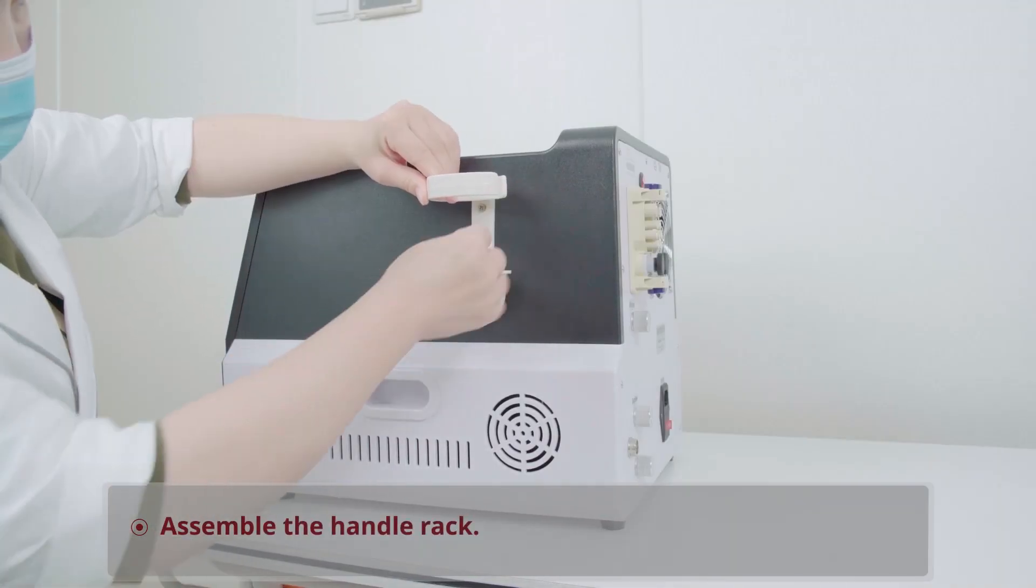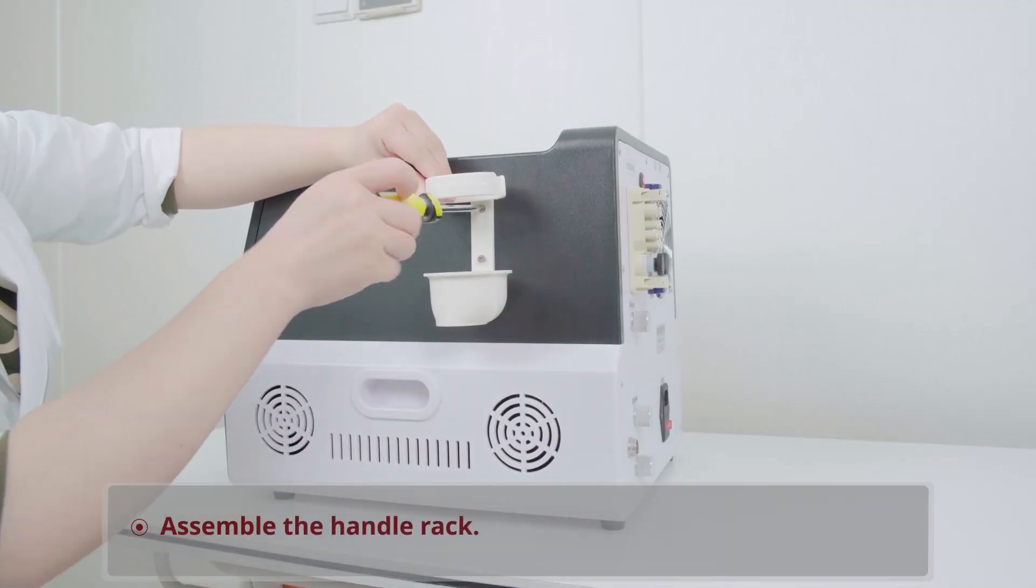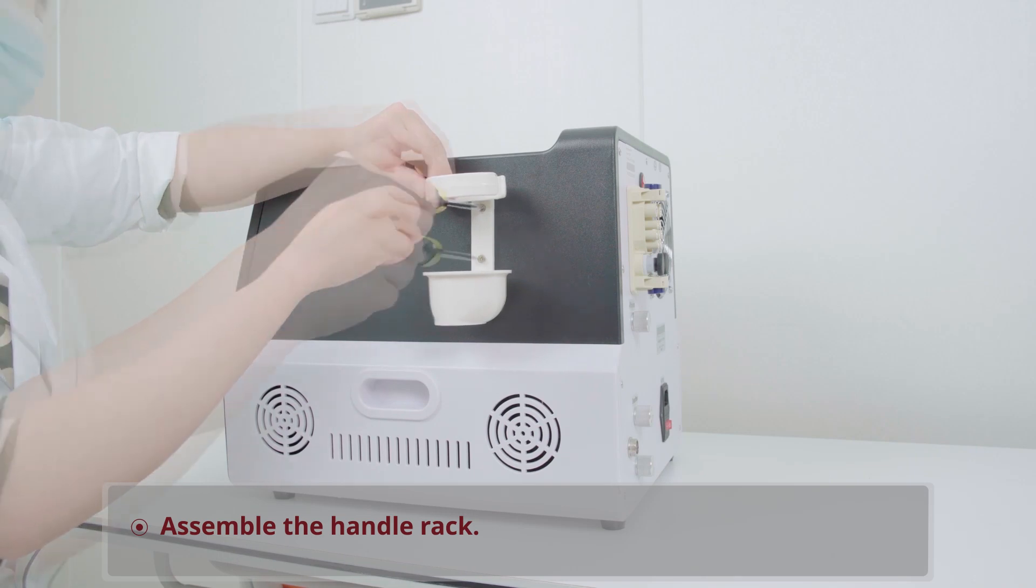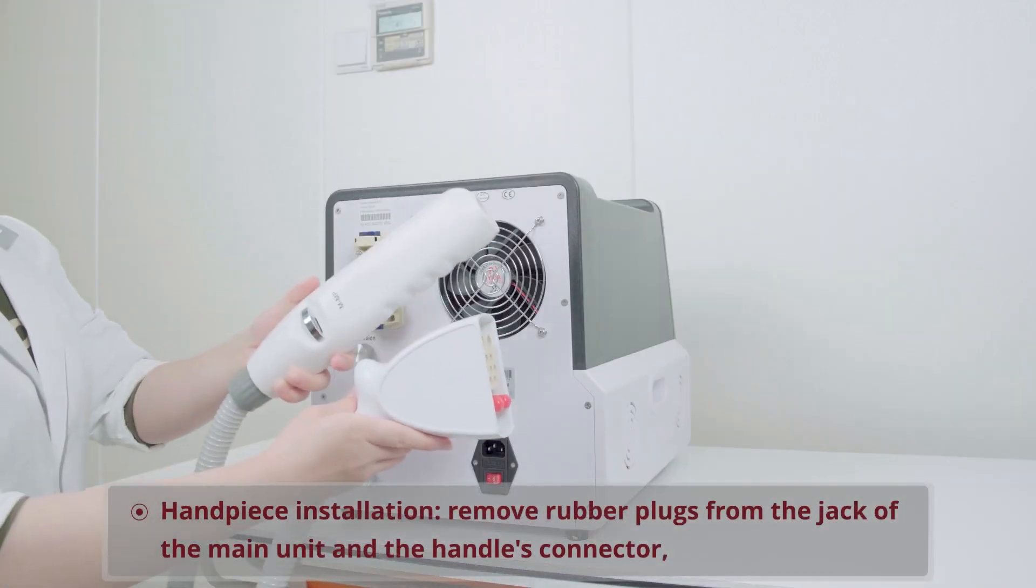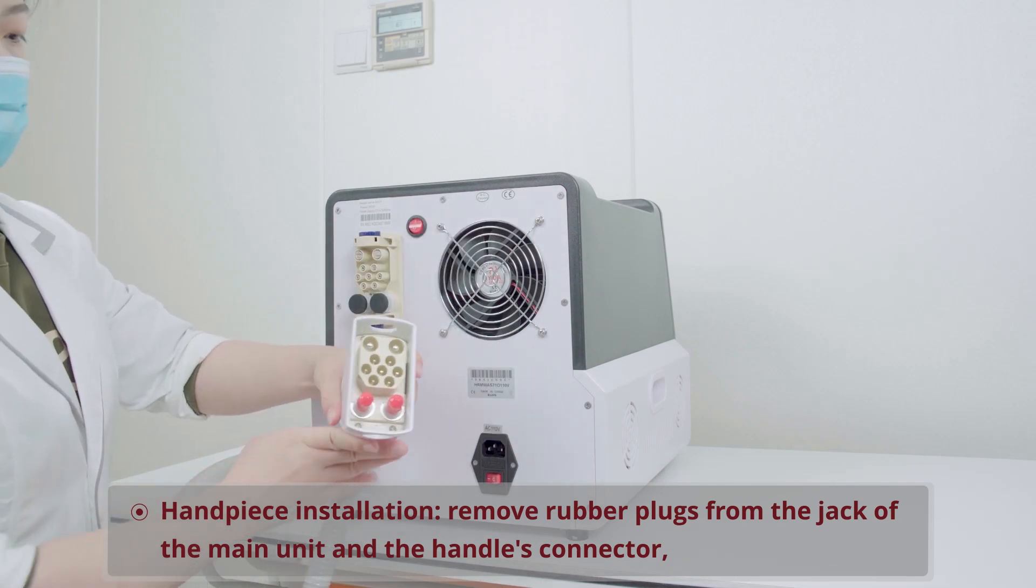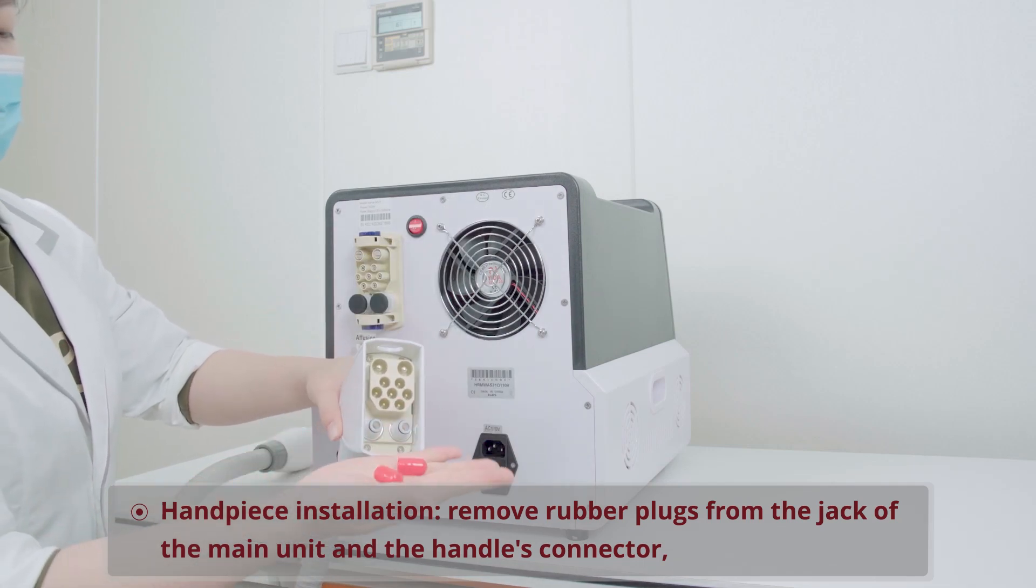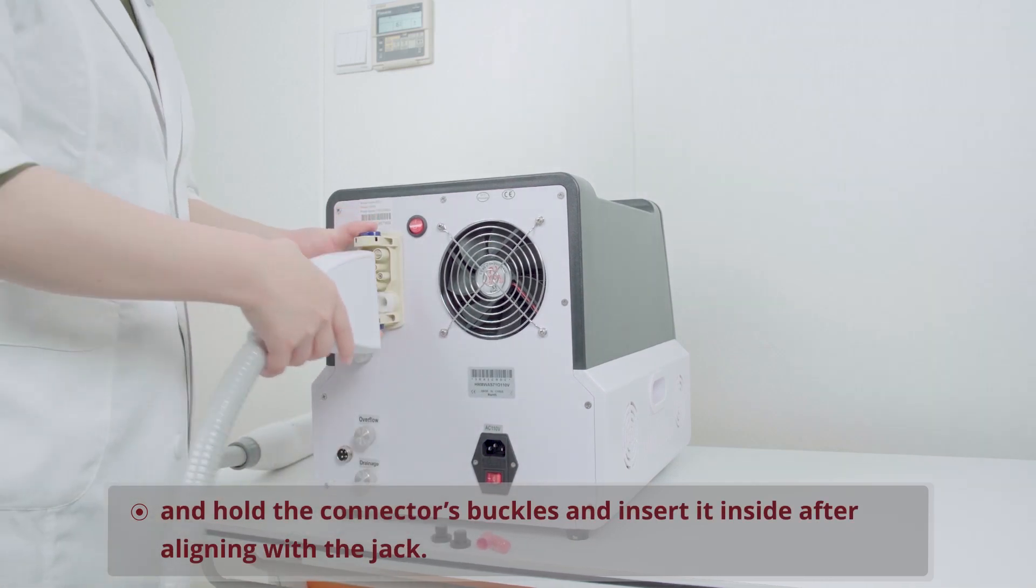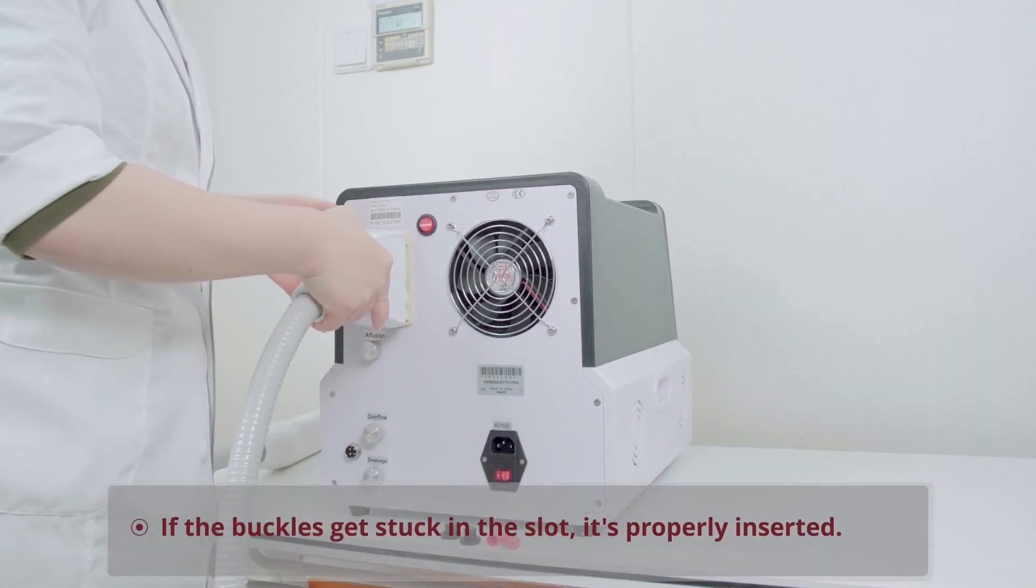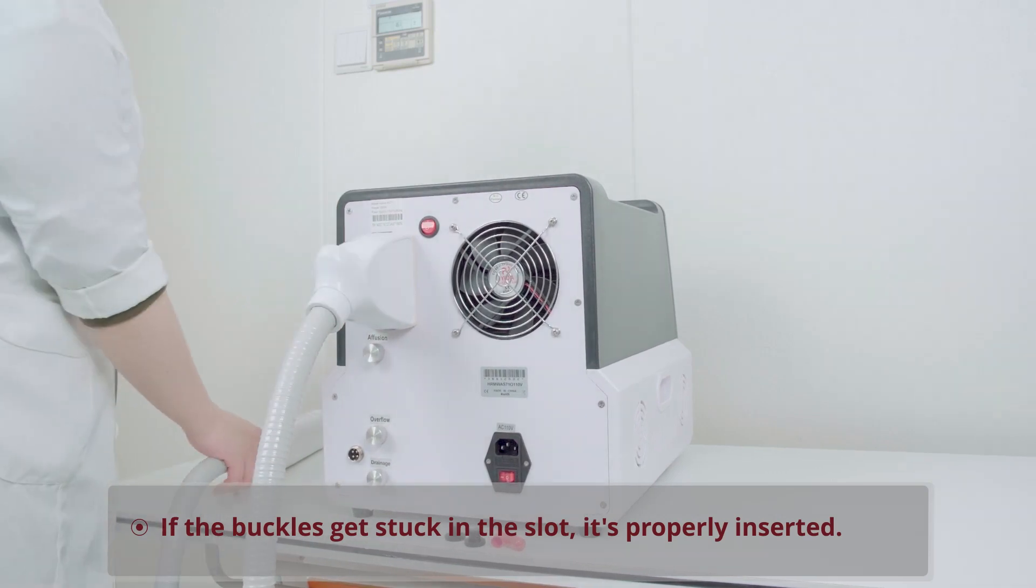Assemble the handle rack. Handpiece installation: remove rubber plugs from the jack of the main unit and the handle's connector. Hold the connector's buckles and insert it inside after aligning with the jack. If the buckles get stuck in the slot, it's properly inserted.